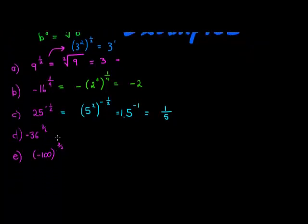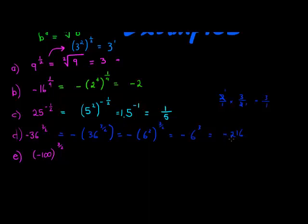The next one, this one looks a little bit more complicated. This one is negative 36 to the power of 3 over 2. Now again that negative has got nothing to do with that exponent, so we'll keep it negative here. Now the 36 we can write as 6 squared to the power of 3 over 2. Now we can multiply the exponents, so we have 2 over 1 times 3 over 2, these 2's cancel. So this is negative 6 to the power of 3.